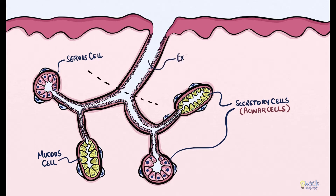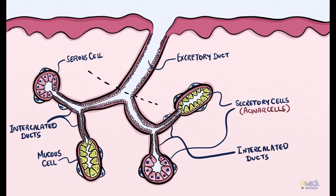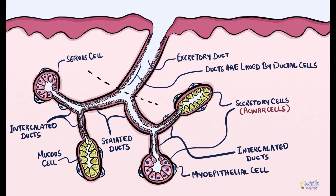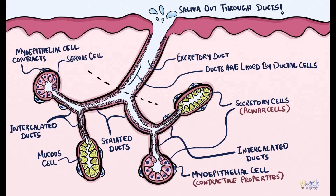The secretory end pieces are continuous with the main excretory duct through intermediary ducts. The lumen of the end piece opens into the intercalated duct, which is continuous with the striated duct, which in turn opens into the excretory duct of the salivary gland. The ducts are lined by ductal cells. The secretory end pieces and the intercalated ducts are associated with stellate-shaped contractile cells called myoepithelial cells. Myoepithelial cells are epithelial cells that also have smooth muscle-like contractile properties, and one of their functions is to contract and help secrete saliva from the acini to the ducts.